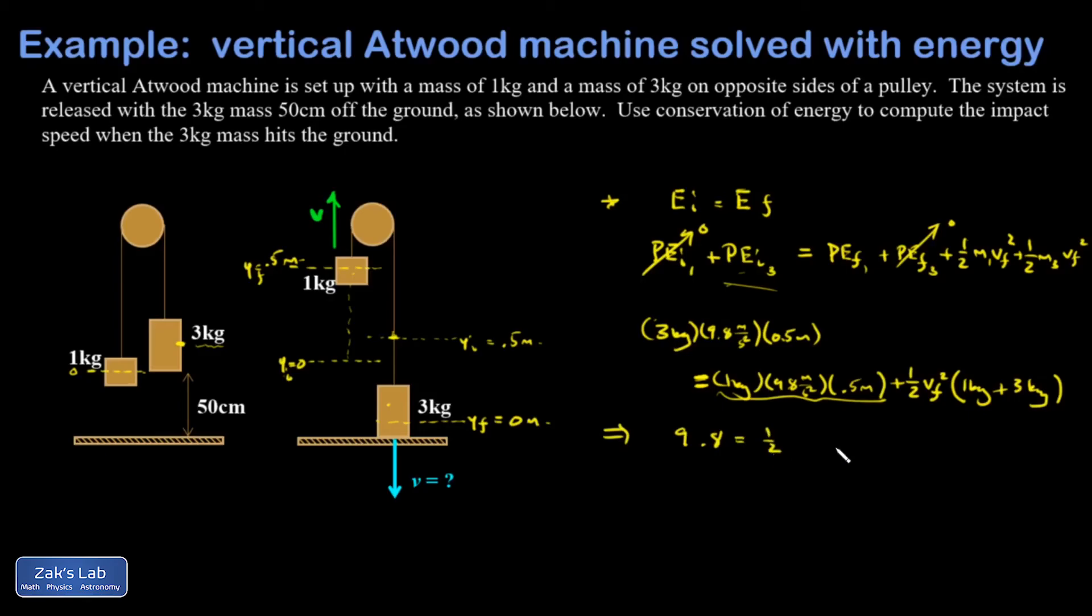And it comes out to 9.8. If I haven't made any mistakes, I think we're cool. One plus three kilograms is four. Four over two is two. So I get V final. I'm going to do 9.8 divided by two and square root it. And I get 2.21 meters per second.